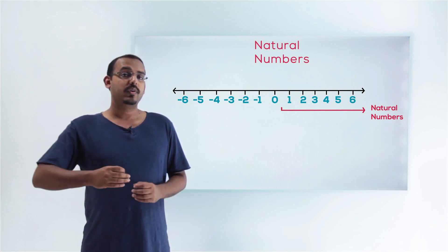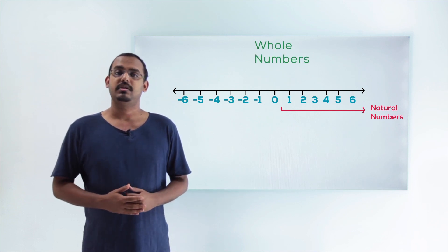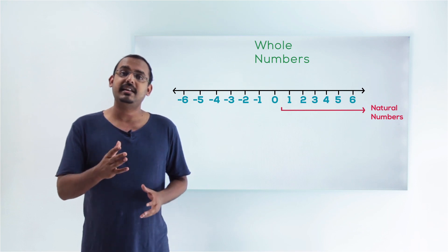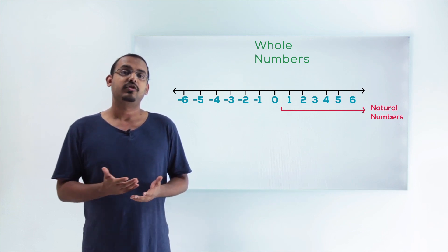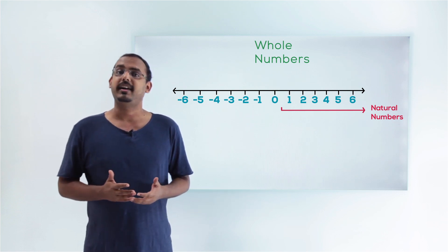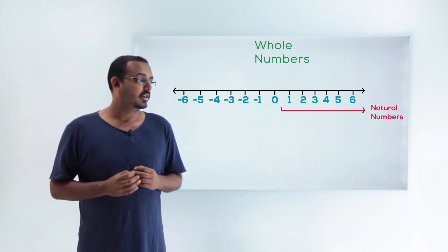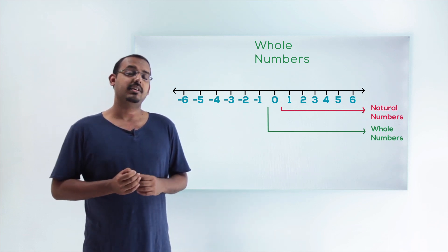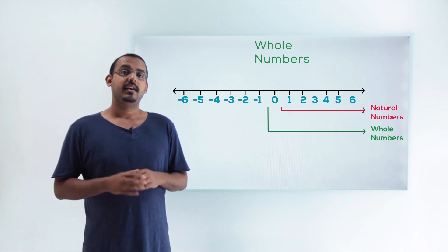Moving on, the next category of numbers is whole numbers. As the name represents itself, whole numbers are numbers which are whole, or complete. There has to be no fractional or decimal point in a whole number. So the numbers from 0 onwards — all these numbers are what we categorize as whole numbers.